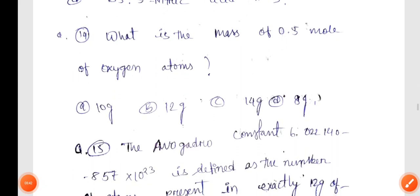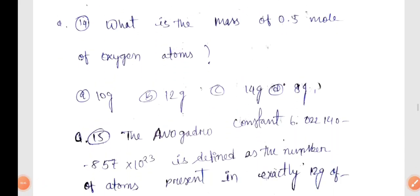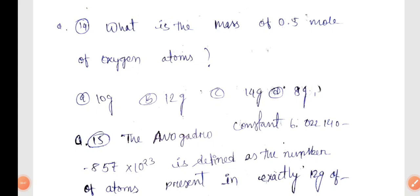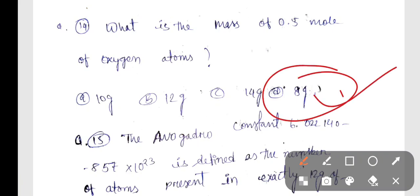Question 14: The mass of 0.5 moles of oxygen atoms is? The answer is 8 grams, Option B is correct.